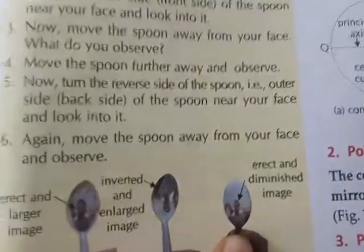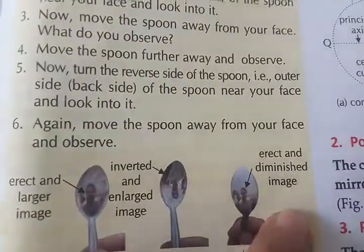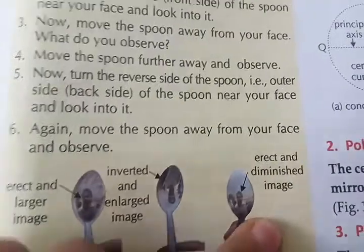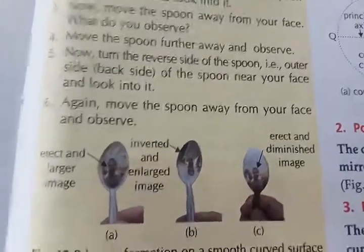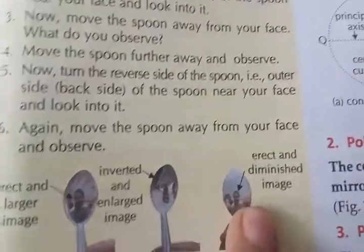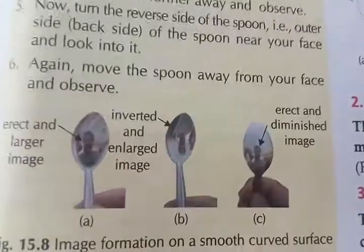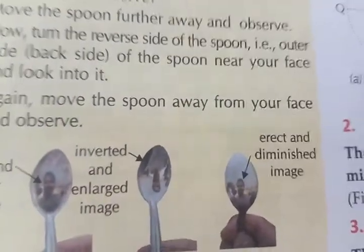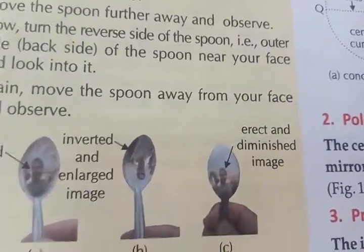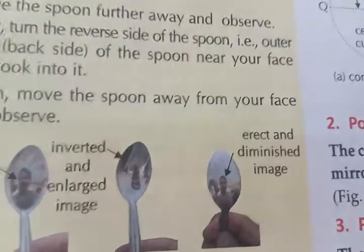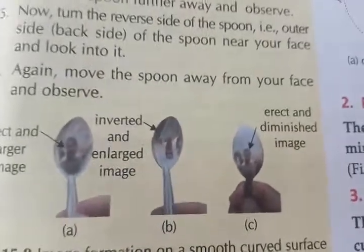This shows the concave surface of the spoon is working like a concave mirror. Now flip the spoon and look at the outer (convex) side. The image you see will be erect and small in size. As you move the spoon further from your face, the image remains erect but becomes even more diminished — and at a certain point, the image may not be visible at all.